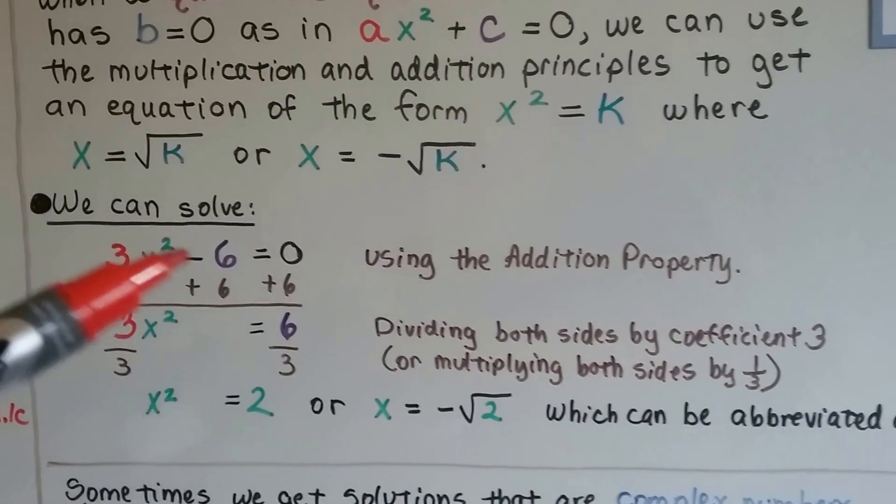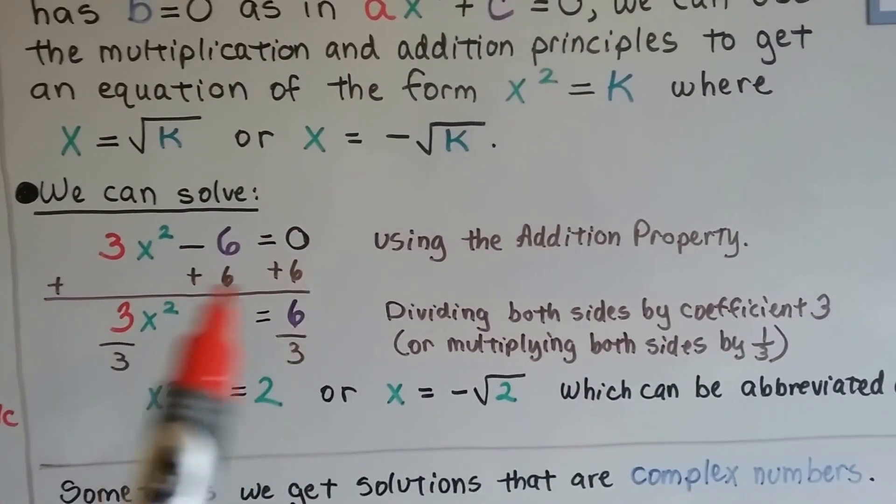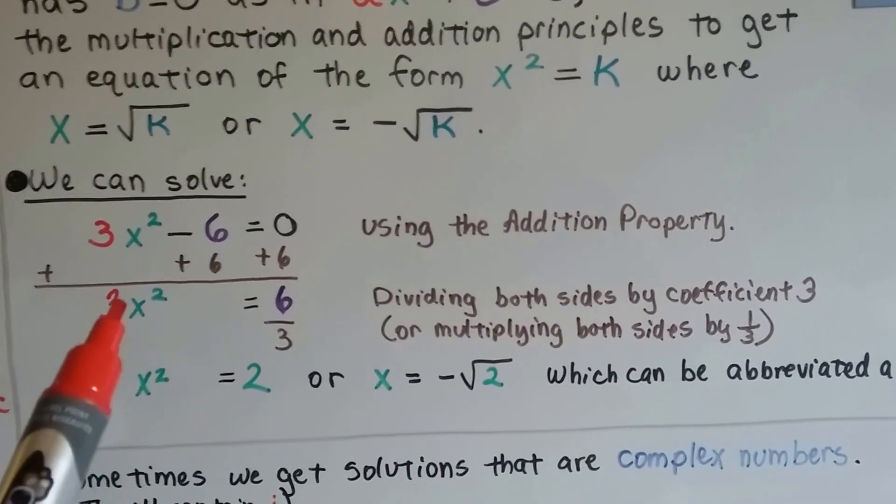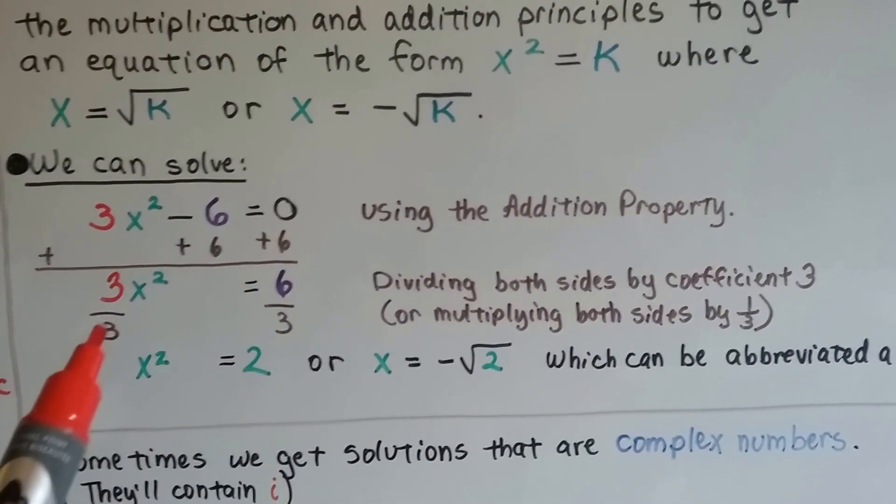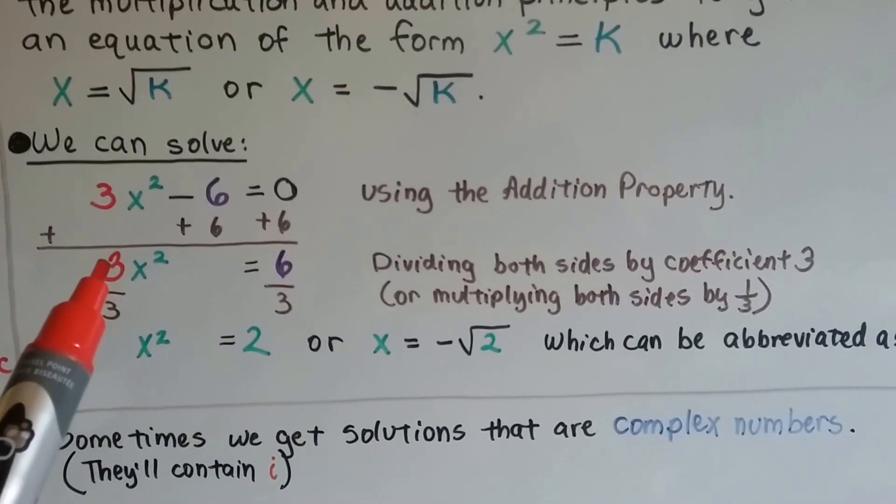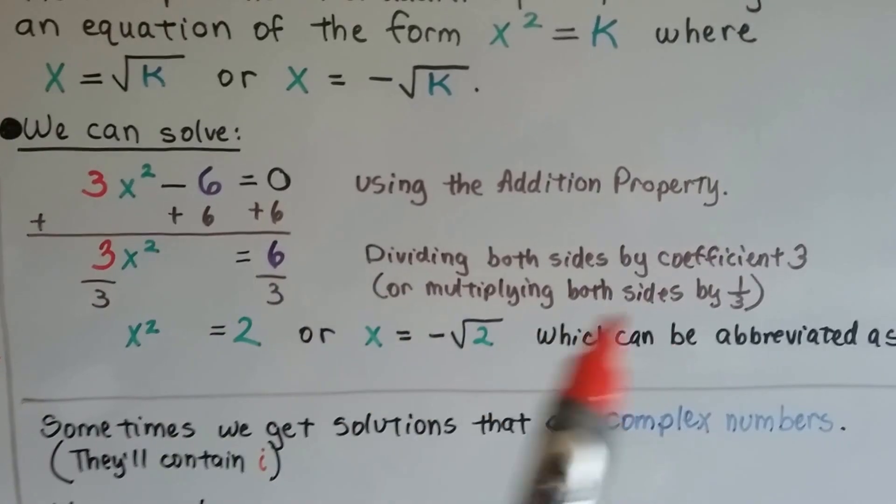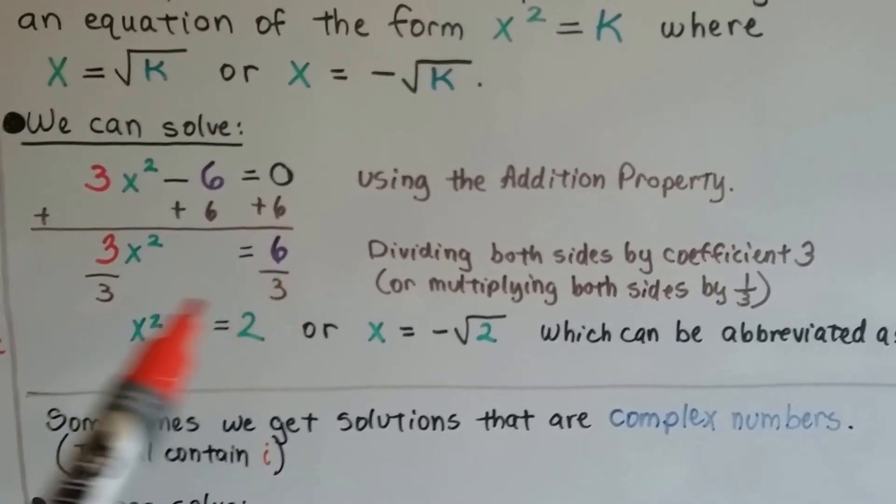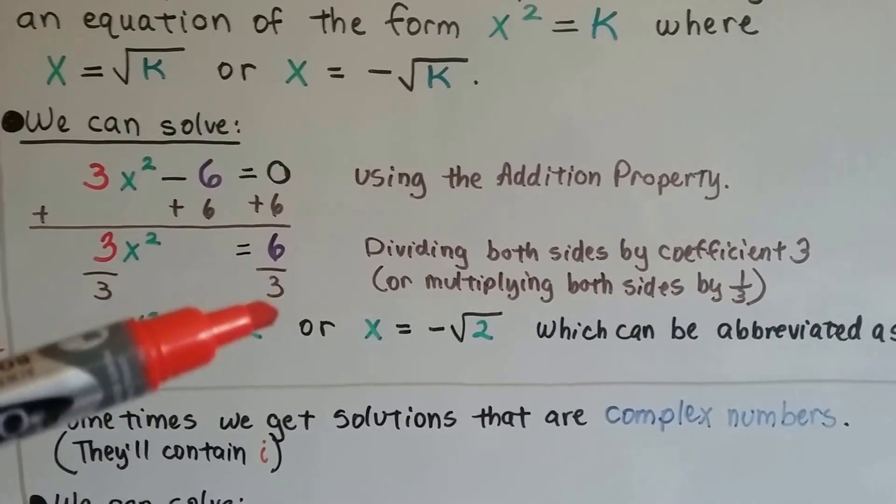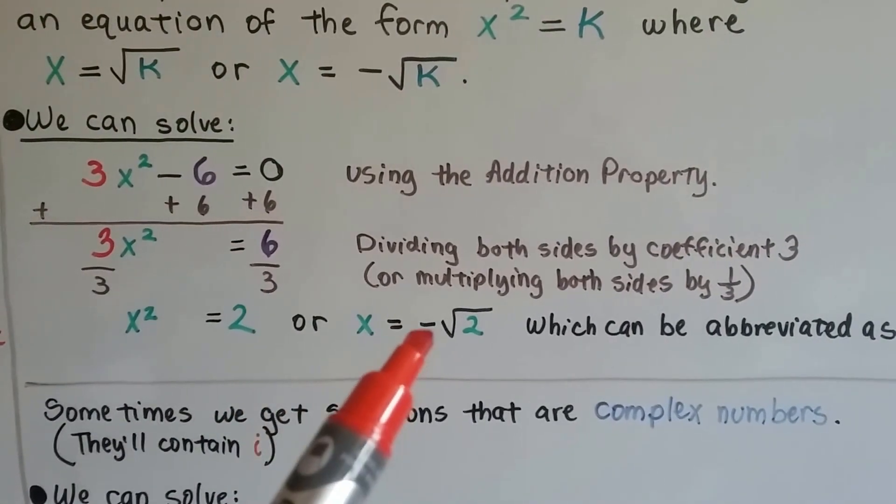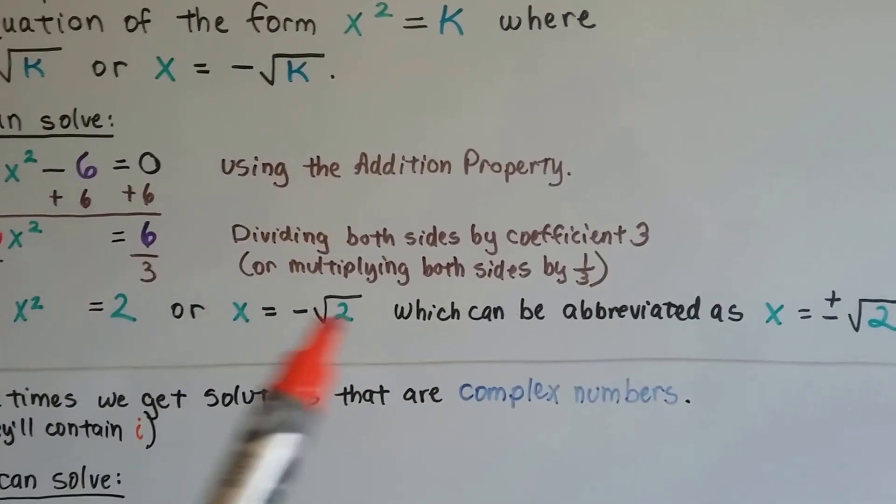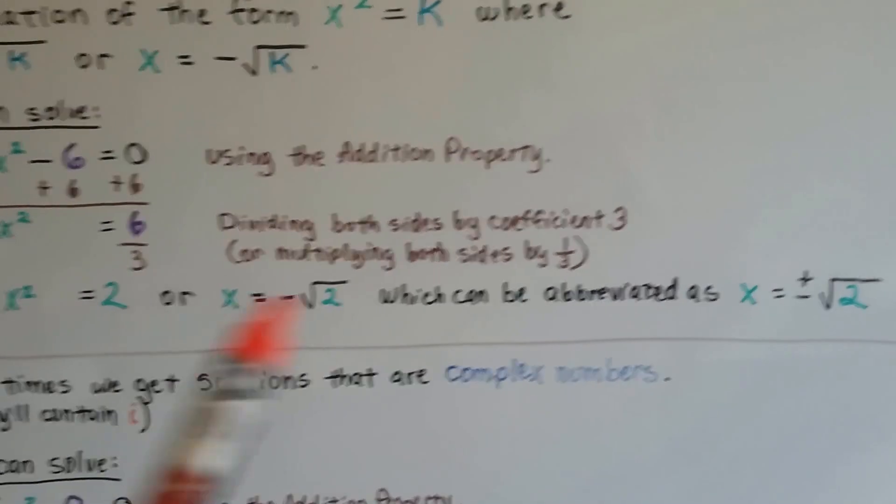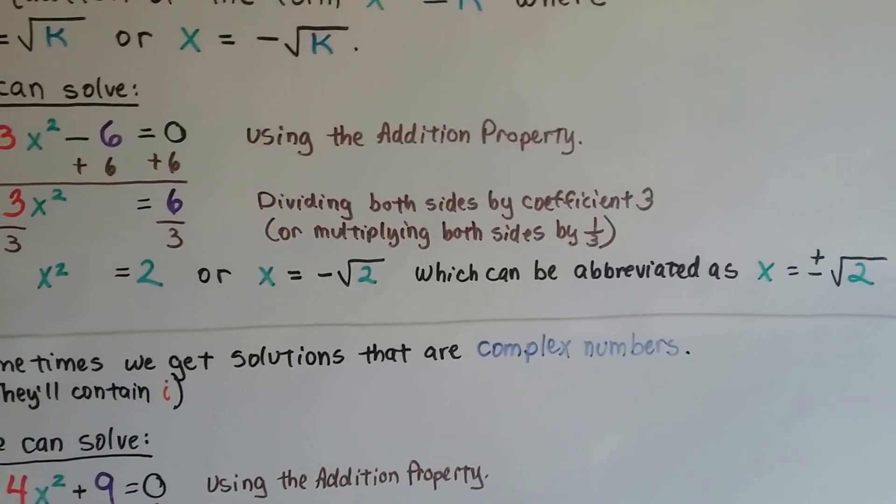So if we have 3x squared minus 6 equals 0, using the addition property, we're going to try to isolate this x squared. So we're going to add 6 to both sides, make this a 0 pair right here. So we have 3x squared equals 6. Now, we can divide both sides of this equation by this 3 coefficient to isolate that x squared. We could also multiply by 1 third, the reciprocal of the coefficient. I like to divide because I think it's easier when there's no fractions. So that gives us x squared equals 2, or x equals negative square root of 2. We can abbreviate this as x equals plus or minus the square root of 2. See? That way you don't have to write the OR and you don't have to write all of that out, you just abbreviate it like that.